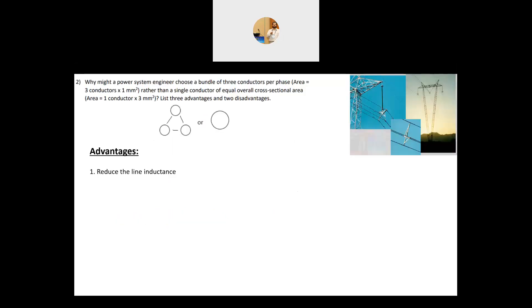Let's move to the second question here. They said, why might a power system engineer choose a bundle of three conductors as their phase and gives you that the conductor each one will have an area of one millimeter square rather having one single conductor equal the total cross-section area which is three millimeter square. It says list three advantages of bundling and two disadvantages.